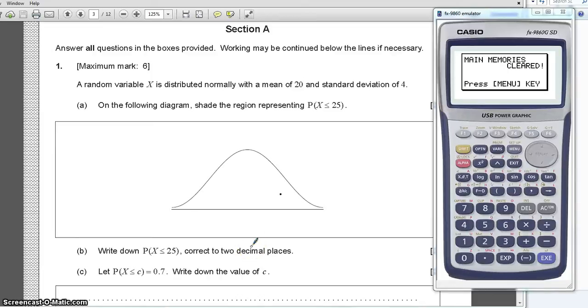Hello, welcome to this calculator tutorial. We're going to solve a normal distribution problem for the IB standard. In this one, you have a random variable X which is normally distributed with a mean of 20 and a standard deviation of 4. That's very important to have the mean and the standard deviation if you want to do it with the calculator. This is obviously a paper 2 question.